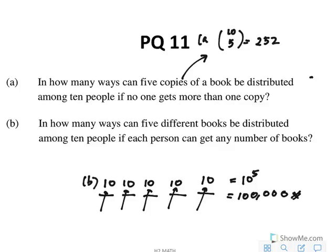Part a, remember, it's just 10 choose 5 - out of the ten people, choose five people to receive the book.